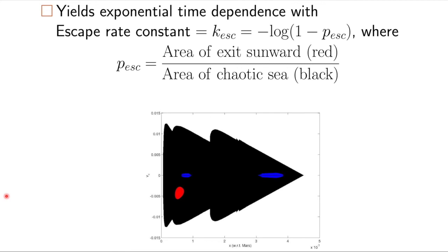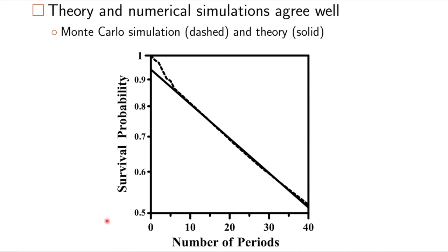Using transition state theory, we get an escape rate constant. This is similar to a reaction rate constant in chemistry, which is related just to the ratio of two areas on the Poincaré section, the area of the exit sunward, which is shown here in red, and the area of the chaotic sea in black. The ratio of those two can be related to this escape rate constant, and we can look at how the survival of an asteroid around Mars is related to the number of periods, so time.